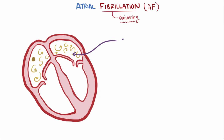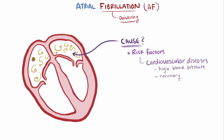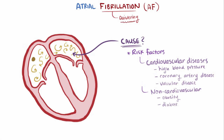How or why does this happen in the atrium? Why do the cells start depolarizing in a totally uncoordinated way? The answer isn't super cut and dry. There are a ton of risk factors that predispose someone to developing AF, and the exact mechanisms aren't well understood. AF often happens alongside other cardiovascular diseases like high blood pressure, coronary artery disease, and valvular diseases — essentially anything that can create an inflammatory state or physically stretch out the atria and potentially damage the cells. Other non-cardiovascular risk factors include obesity, diabetes, and excessive alcohol consumption. There also seems to be a genetic component as well.